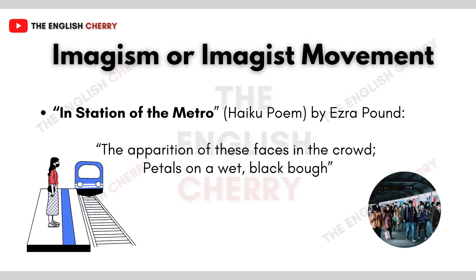The most famous example of Imagist poetry is 'In a Station of the Metro,' a haiku poem written by Ezra Pound, published in 1913. The poem has a total of just 14 words. It reads: 'The apparition of these faces in the crowd; petals on a wet, black bough.'